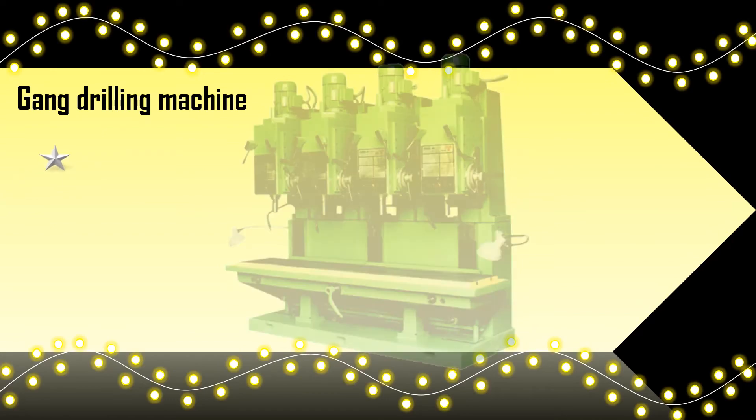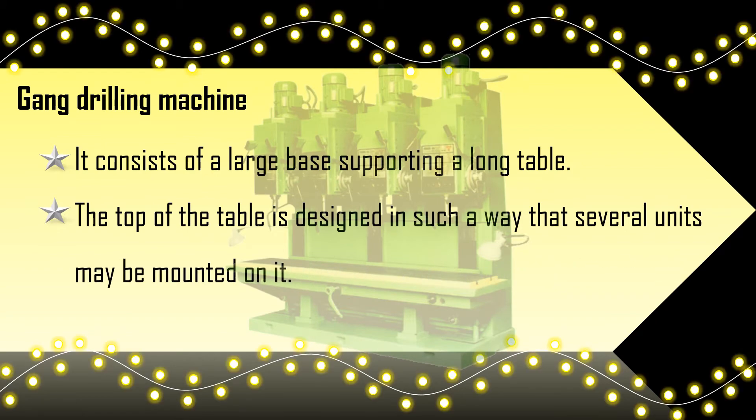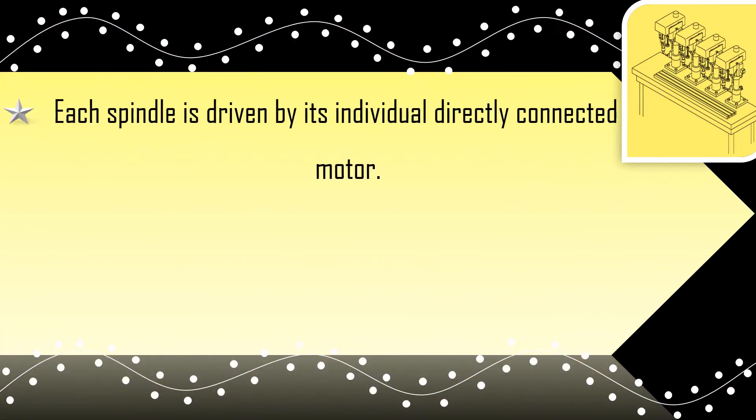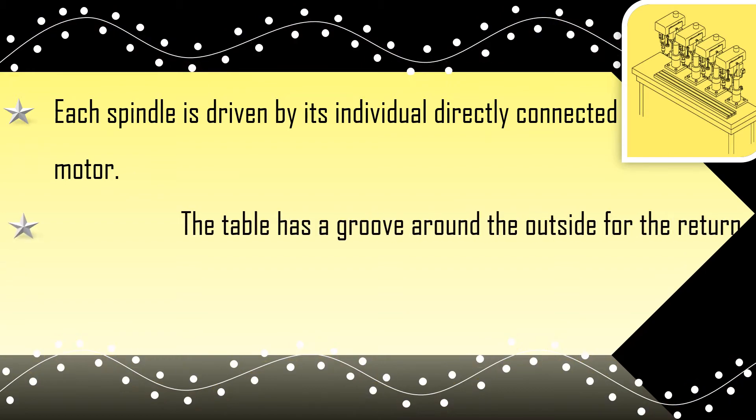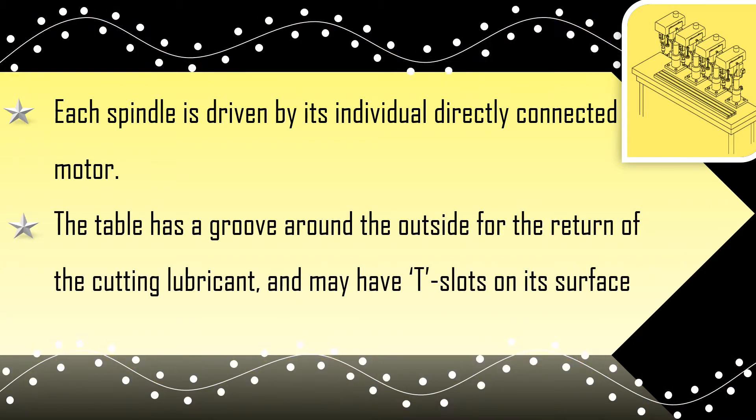Gang drilling machine. It consists of a large base supporting a long table. The top of the table is designed in such a way that several units may be mounted on it. Each spindle is driven by its individual directly connected motor. The table has a groove around the outside for the return of the cutting lubricant and may have T-slots on its surface for ease in clamping the work to the table.